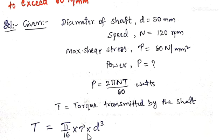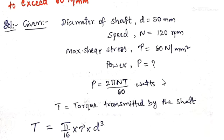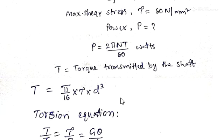The torque is given by the formula T = π/16 × τ × d³. This is the torque transmitted by the solid shaft. The given case is a solid shaft only, because only one diameter is given. This is the torque formula for the solid shaft, which you can remember as a direct formula.